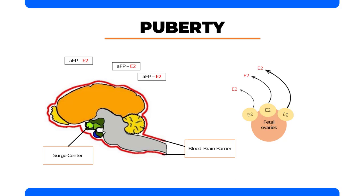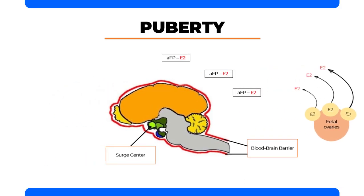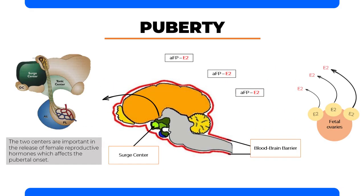Basically, the hypothalamus of females contains two functional areas responsible for the secretion of GNRH — the tonic and surge centers. The two centers are important in the release of female reproductive hormones which affect the pubertal onset.